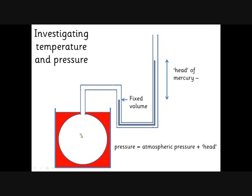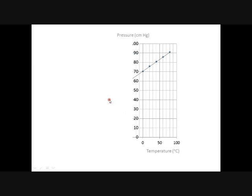We're increasing the temperature without allowing the volume to increase. We can measure the head of mercury required at different temperatures, and therefore work out what pressure will keep the volume the same as we increase the temperature. If you do that experiment, you get a graph with temperatures from 0 up to maybe 80 degrees C on one axis, and total pressure — the atmospheric pressure plus the extra head of pressure needed to keep the volume constant — on the other.